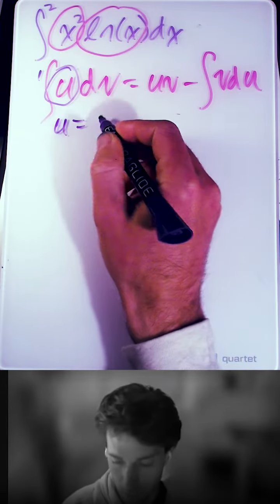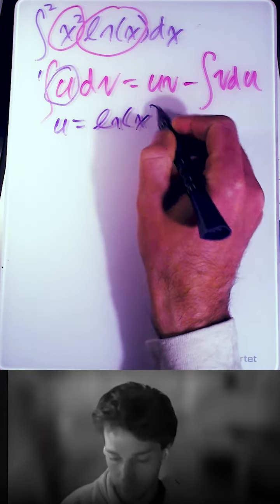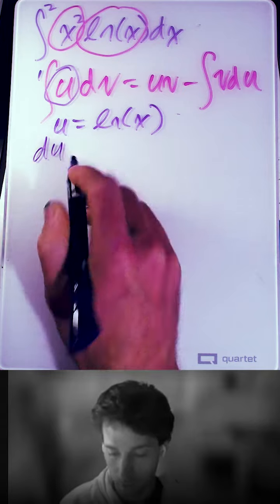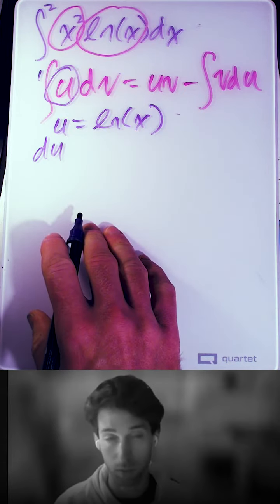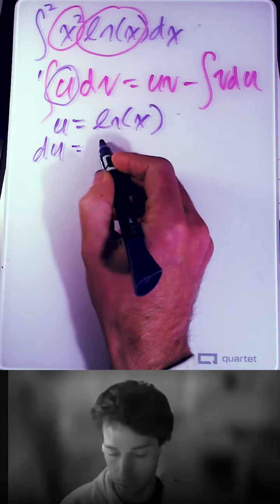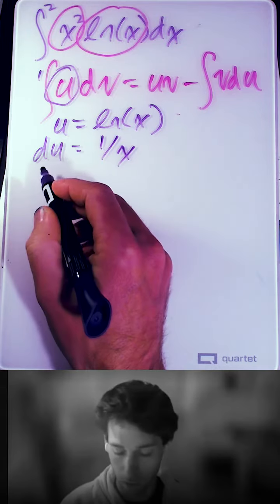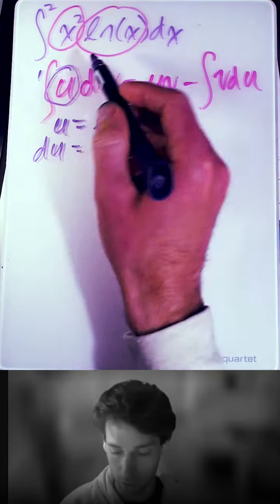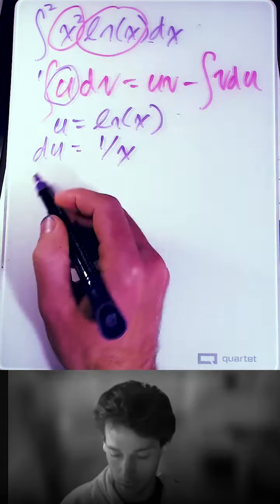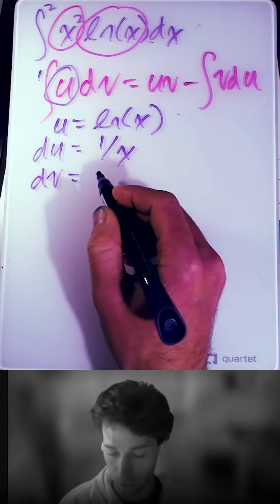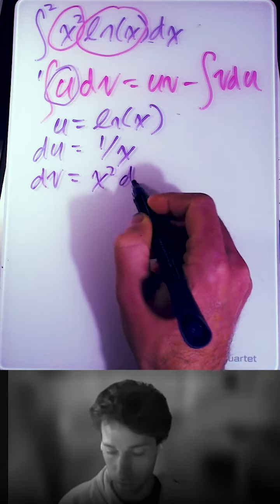So u equals ln of x. du is going to be the derivative of ln of x, which is 1 over x. So this is u dv. dv is equal to x squared dx.